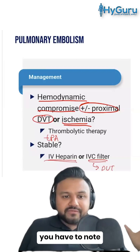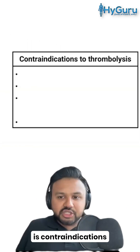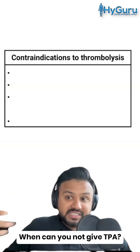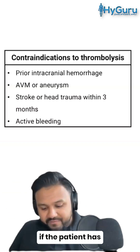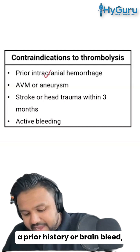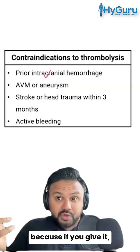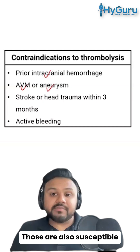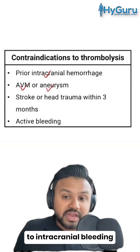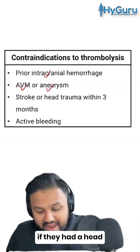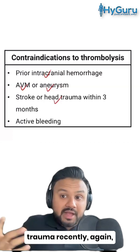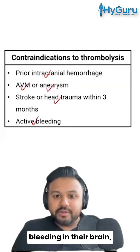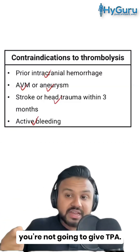One of the things you have to note is contraindications to thrombolysis — when can you not give TPA? You can't give TPA if the patient has a prior history of brain bleed, because if you give it, they might bleed again. If they have an AVM or an aneurysm, those are also susceptible to intracranial bleeding. If they had a head trauma recently, they're predisposed to bleeding. Or if they have active bleeding in their brain, you're not going to give it.